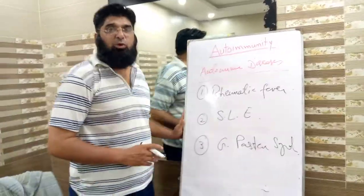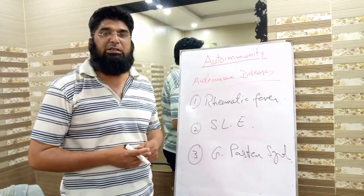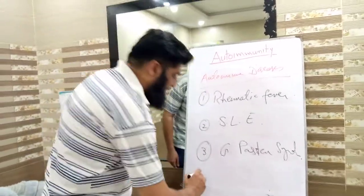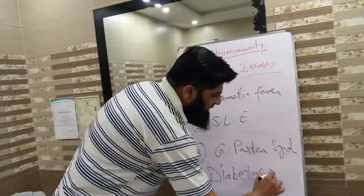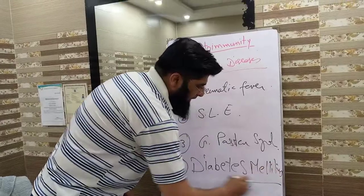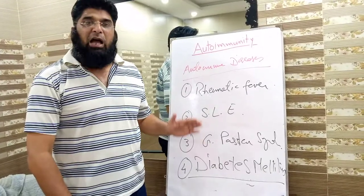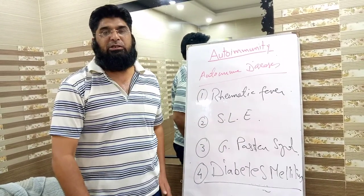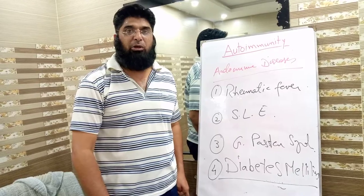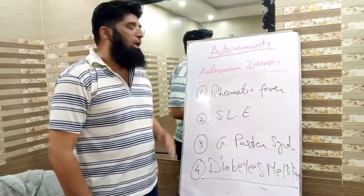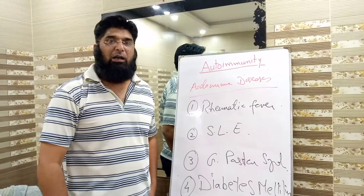Around us, the most prevalent autoimmune disease is diabetes mellitus. In this case the body forms antibodies against the islets of Langerhans cells, and as a result there is non-production of insulin in the body. So this was a brief review about autoimmunity. Thank you students.